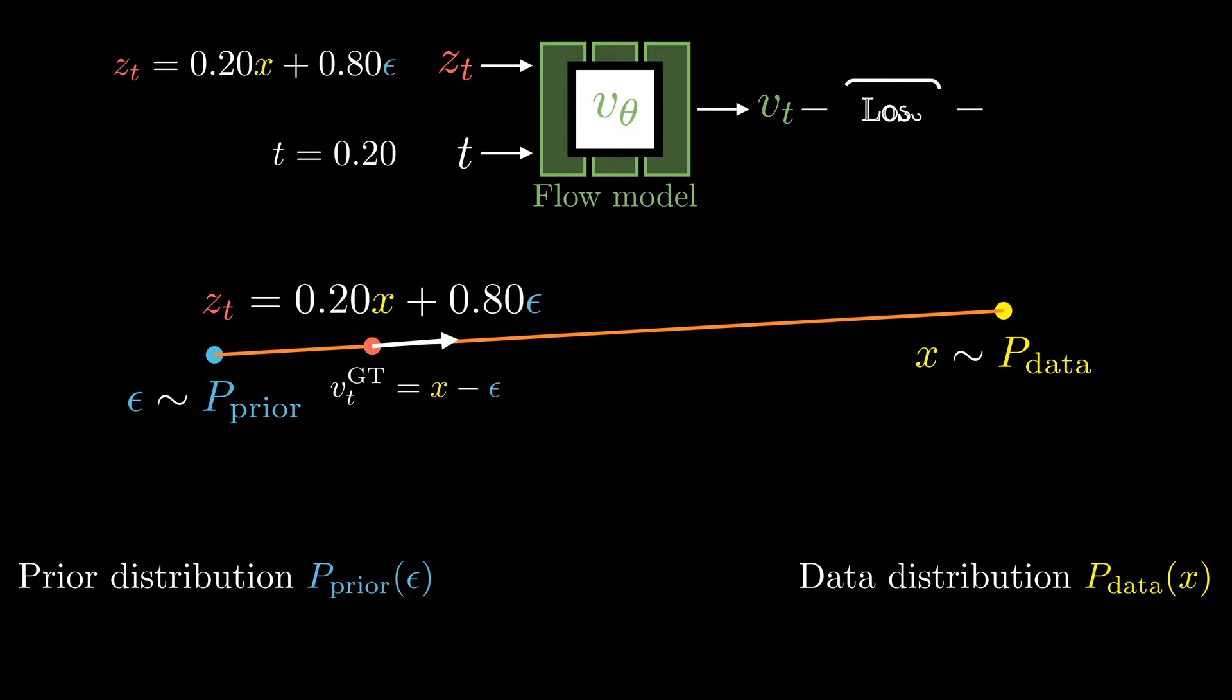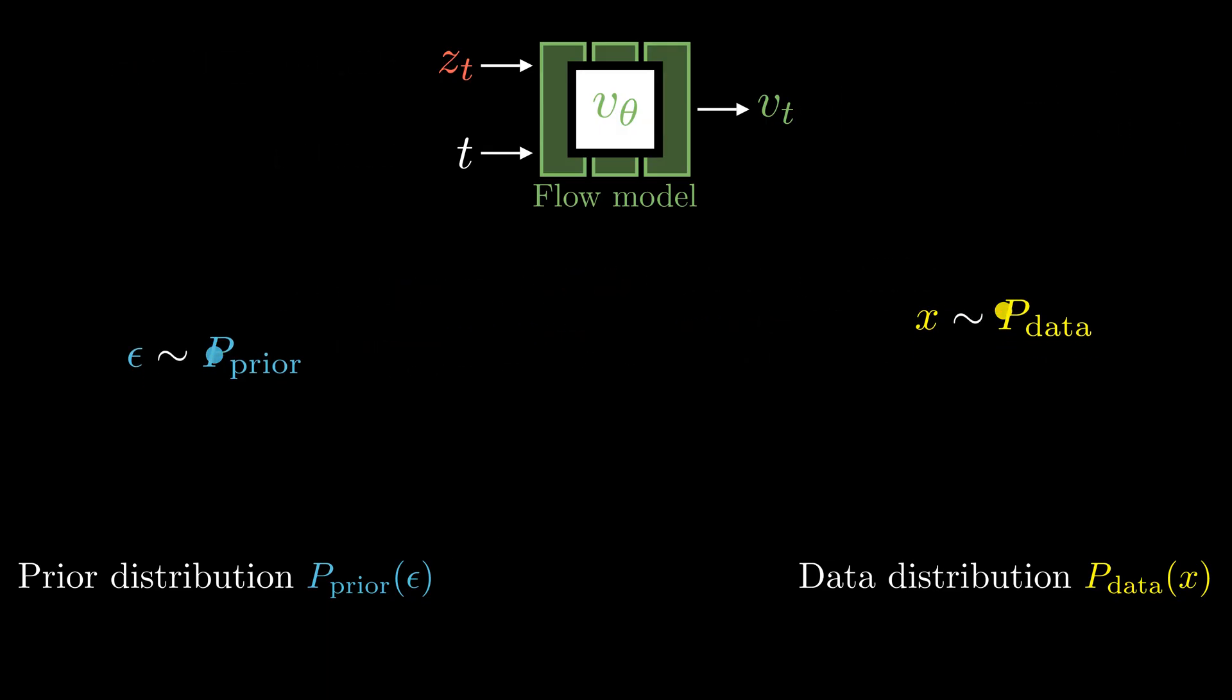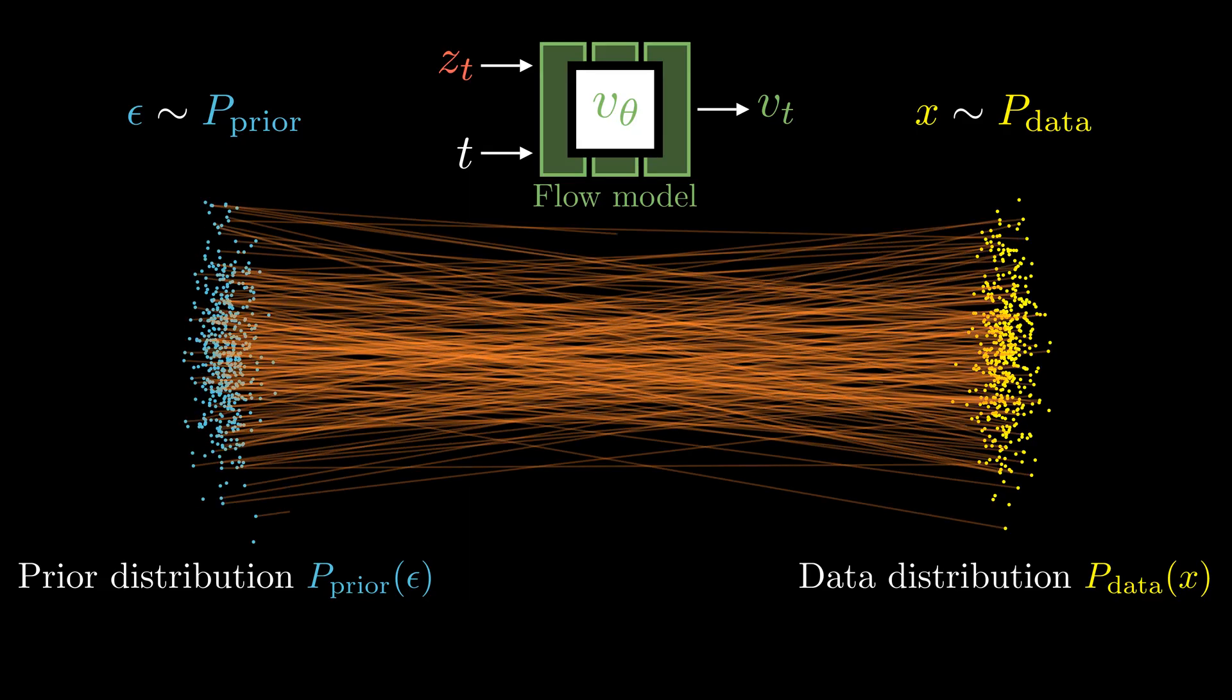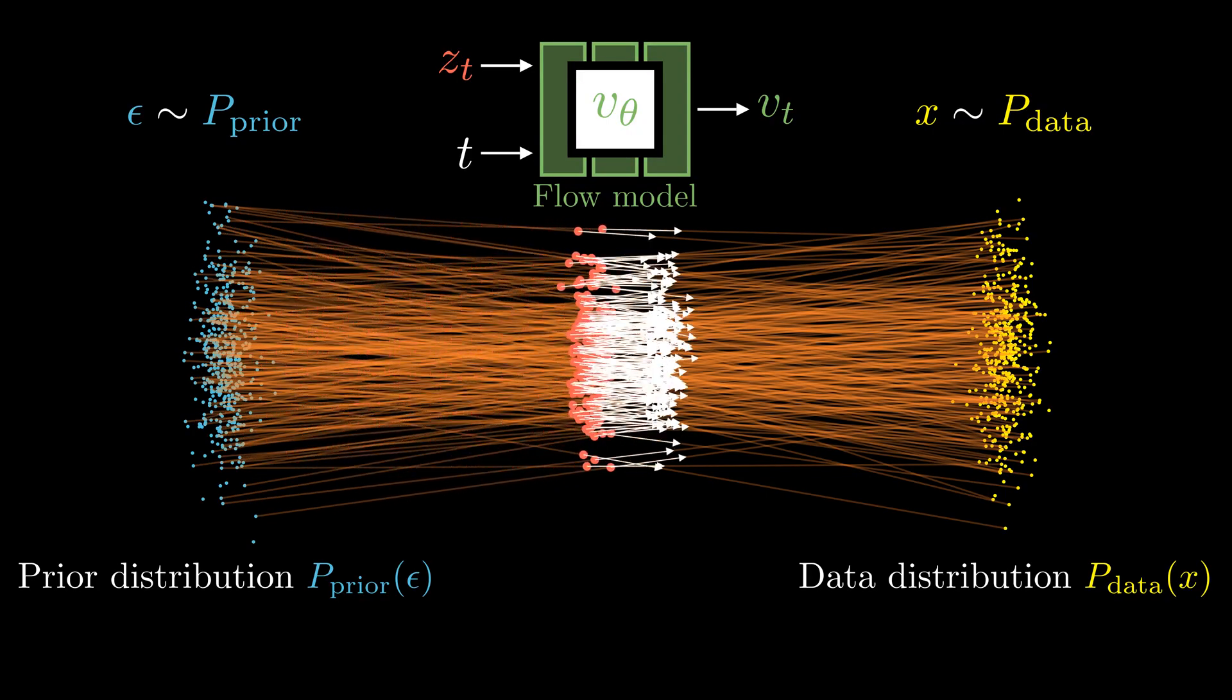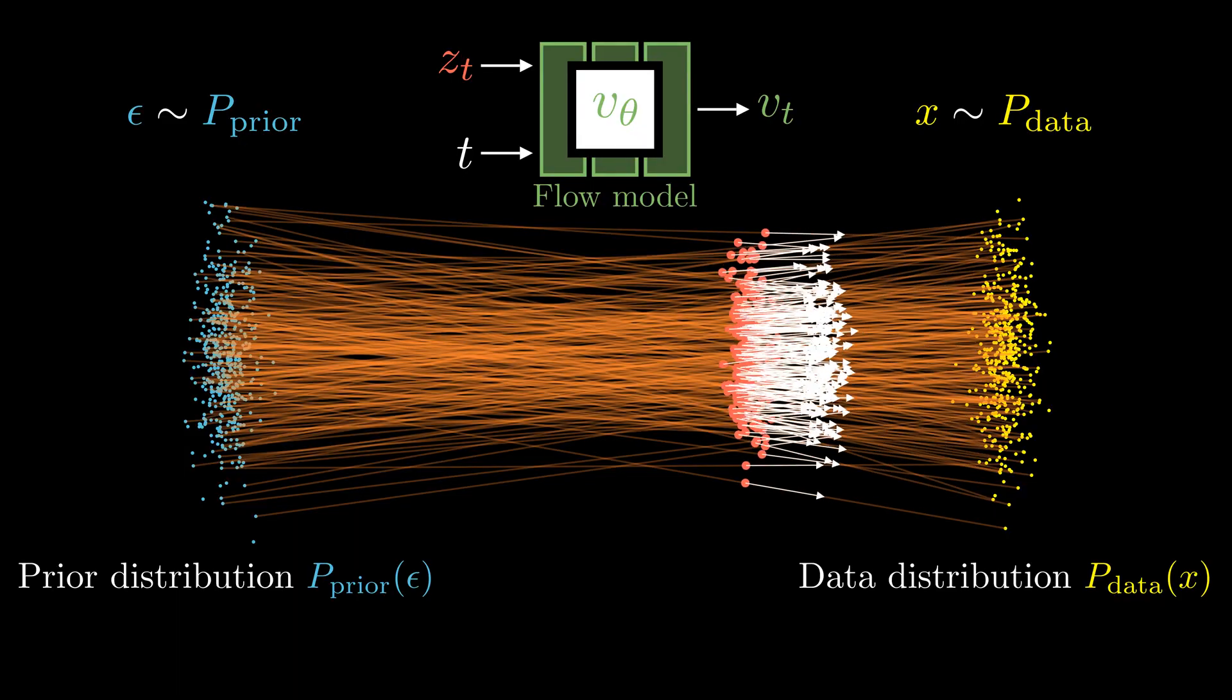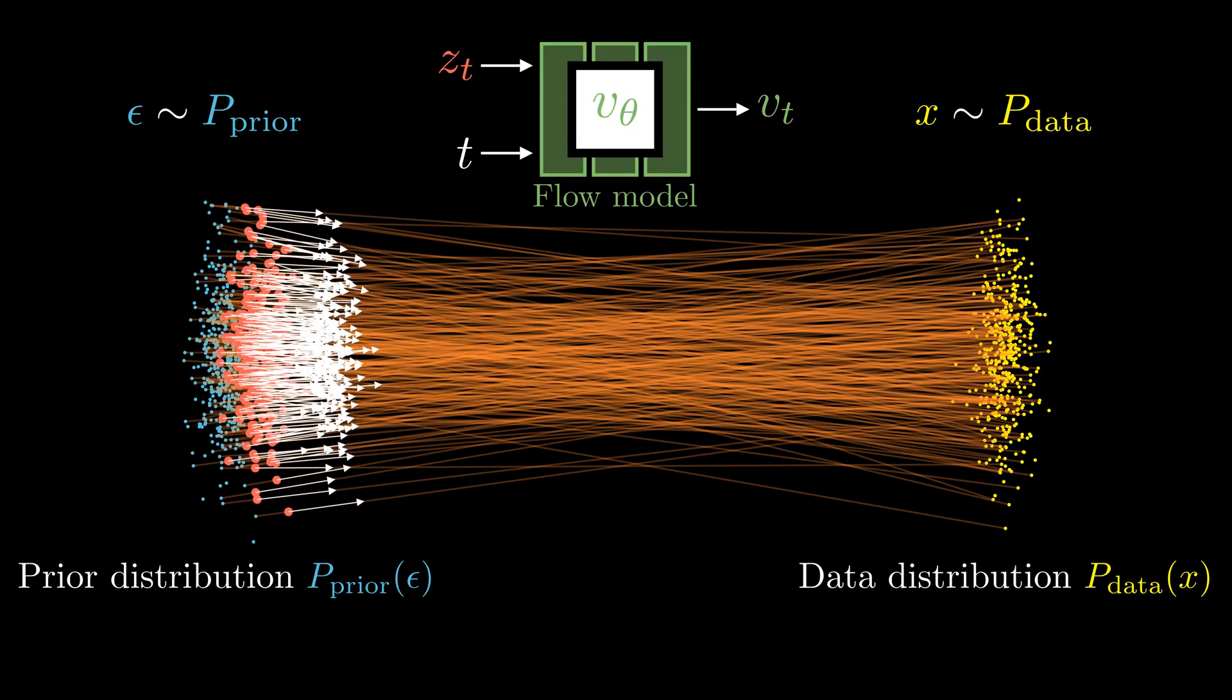Similarly, we train a neural network to predict this velocity vector. Any point on this line share the same velocity vector. We repeat this by drawing random pairs of samples from the prior and data distributions. This gives us many conditional paths between them and lots of training data for our flow model. It turns out minimizing this conditional flow matching loss is equivalent to the original flow matching loss.